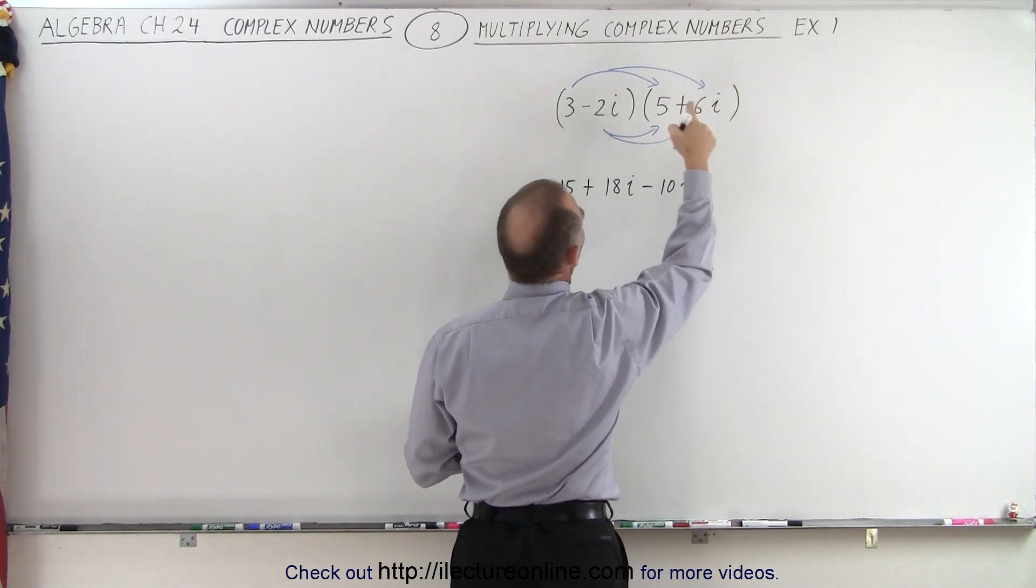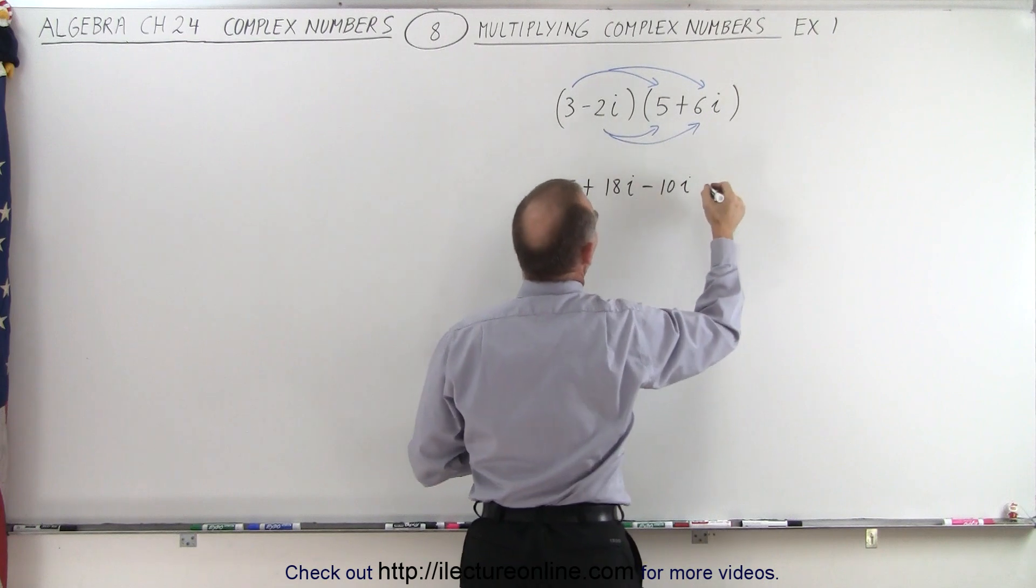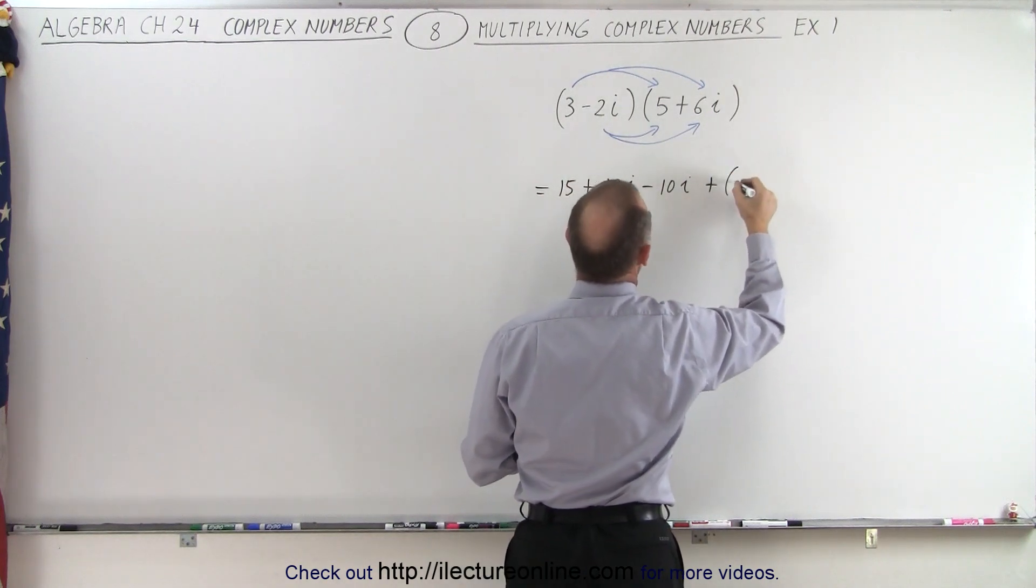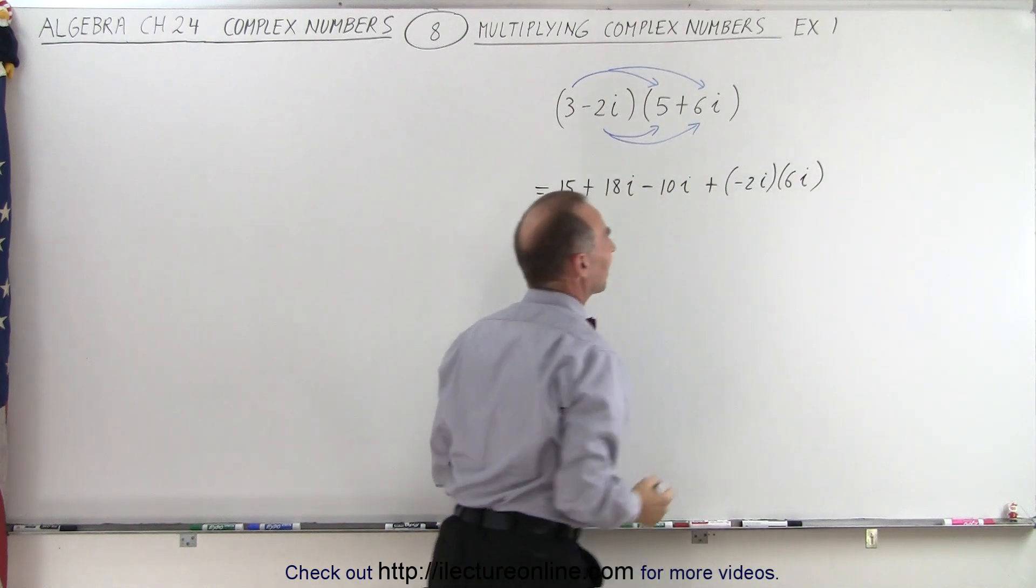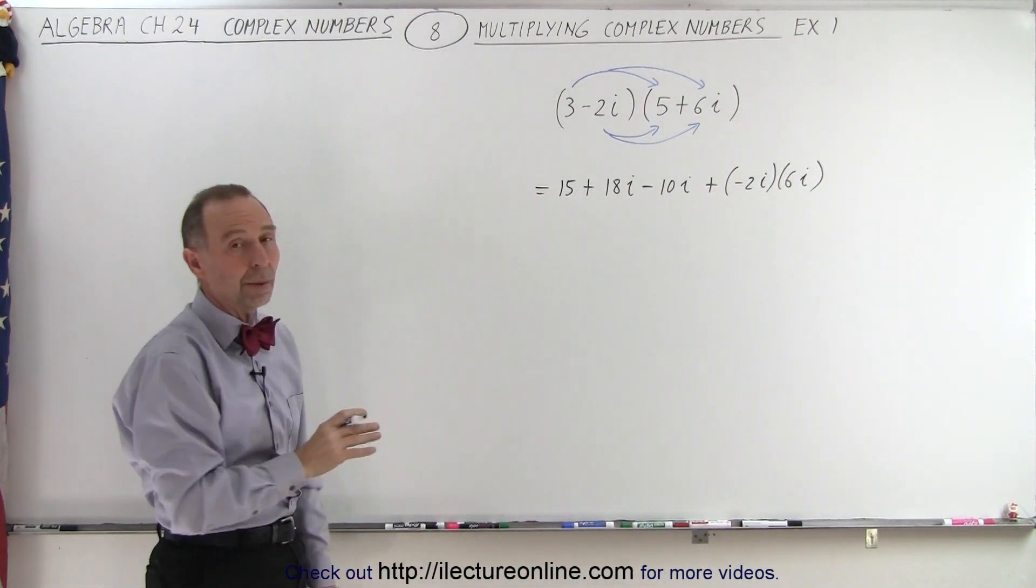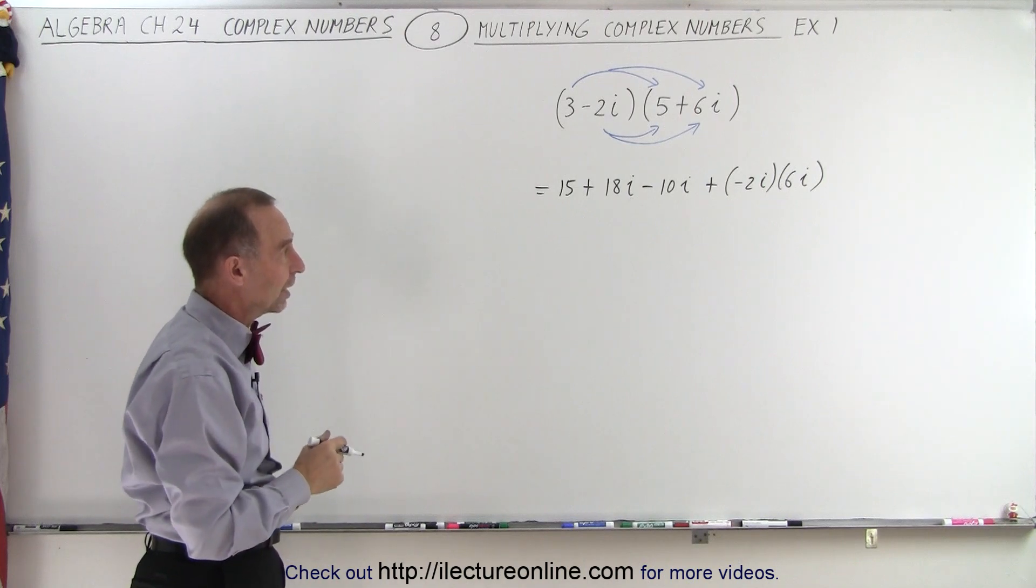and a negative 2i times a positive 6i. I'm going to write it like this, plus a negative 2i times a positive 6i, like this. And the reason why I did that is because it's a little tricky when we multiply two imaginary numbers together.